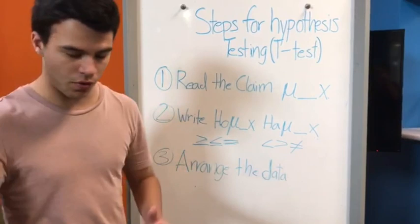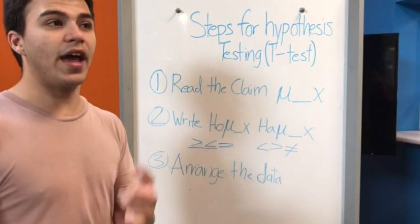Each one has their own. The third step is to arrange the data, whether it's the mean, or the x bar, or the sample size, or whatever. The data you have, you have to arrange it, so then you can decide which test to use.